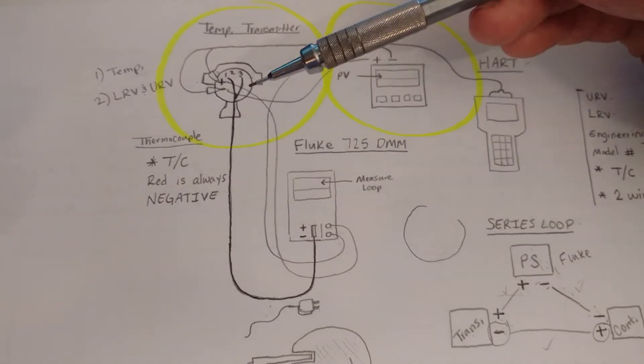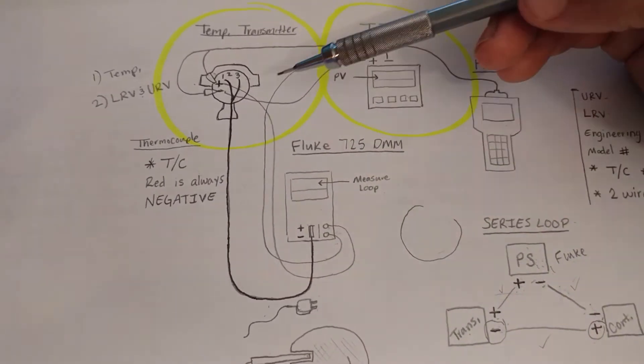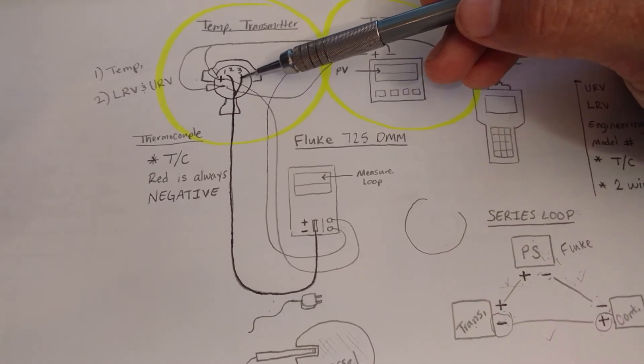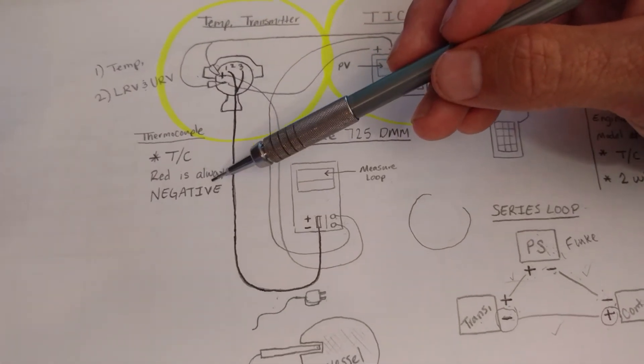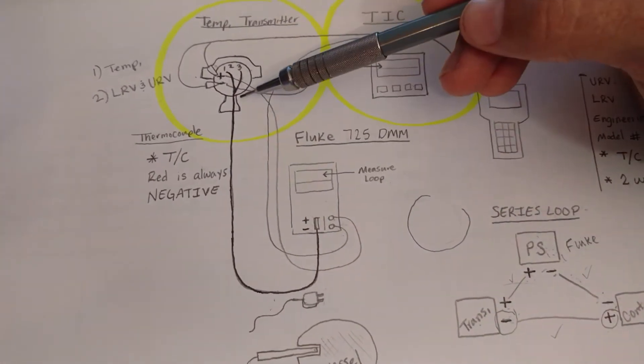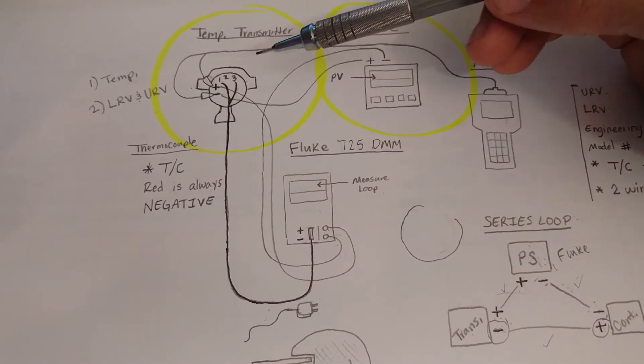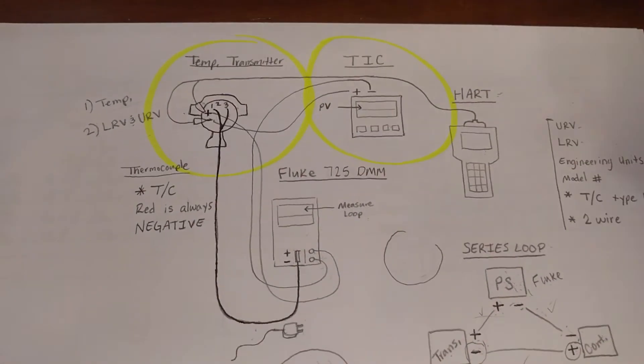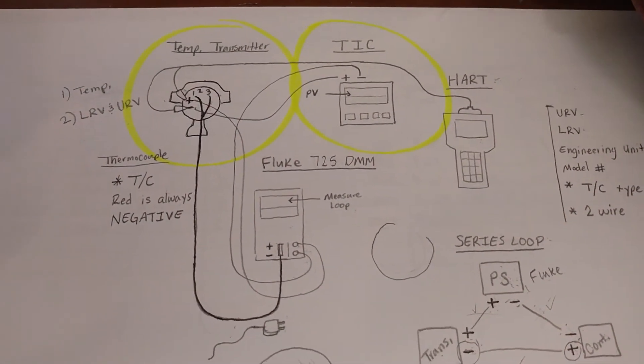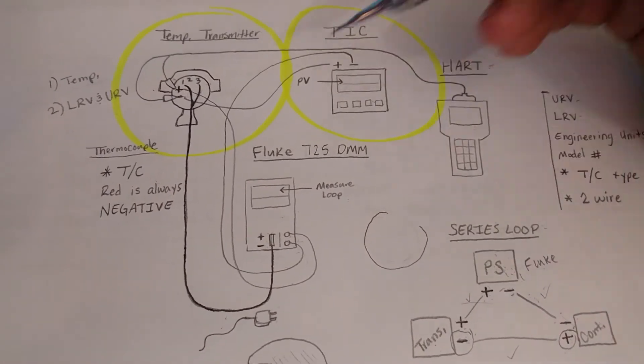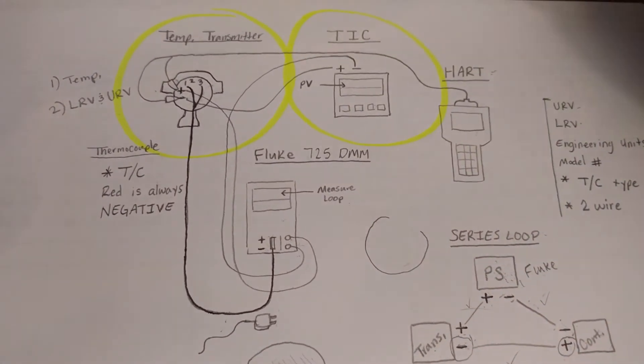The negative, or the other end of the thermocouple, is going to have a red cord, which is going to always be negative. The red cord is always negative. And the other cord will be positive. And keep in mind, there are different types of thermocouples. In this situation, it is a two-wire thermocouple.